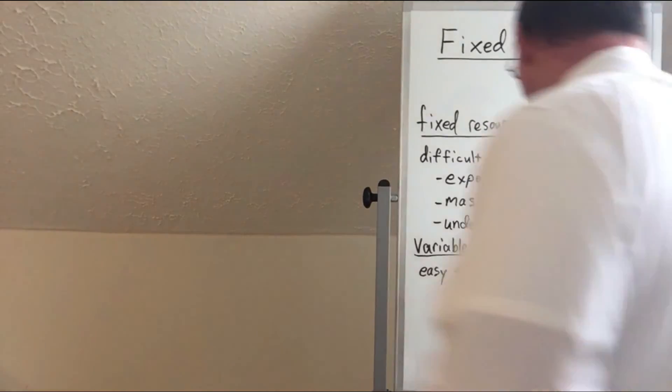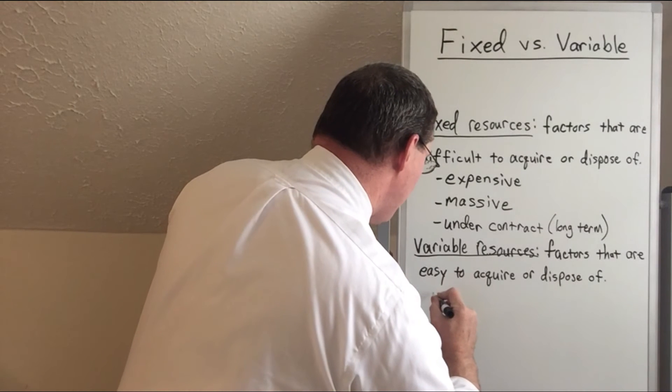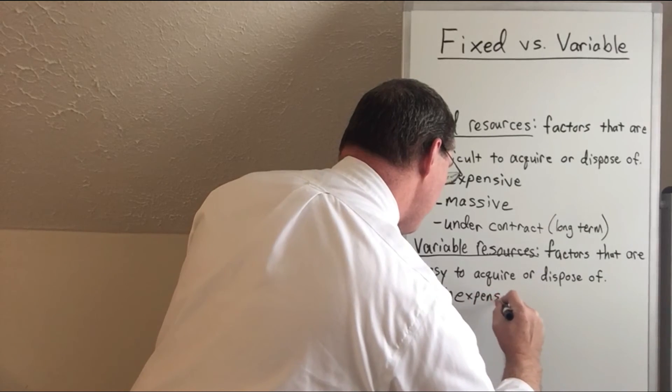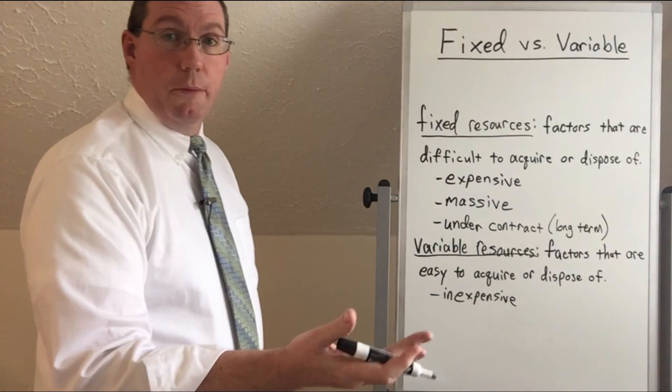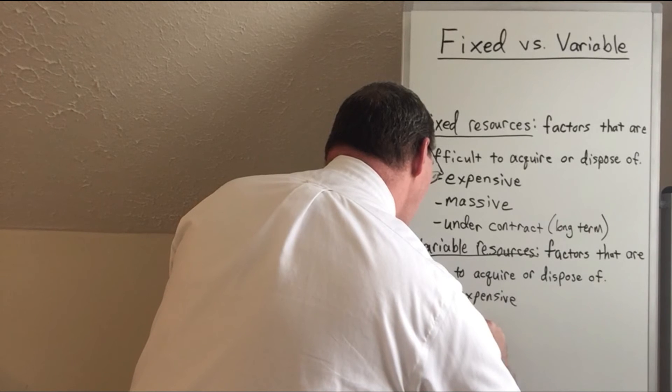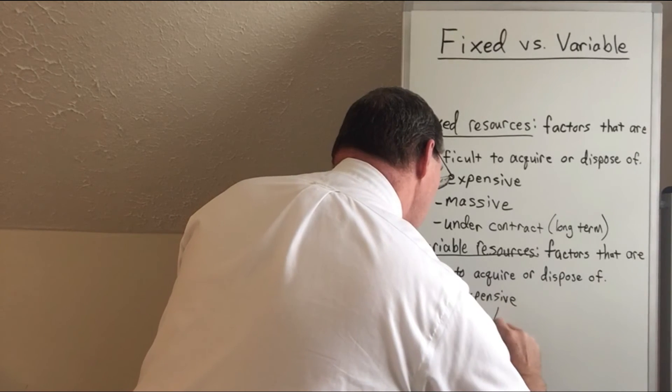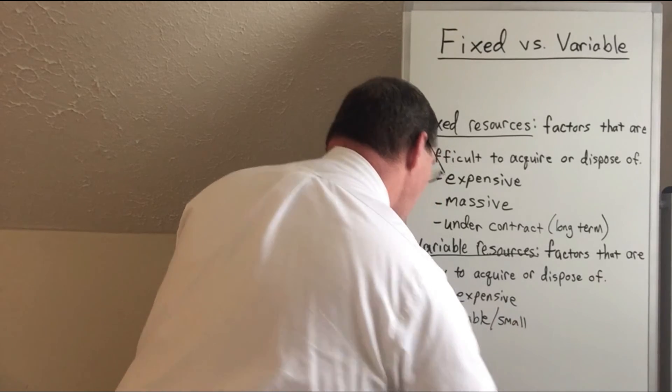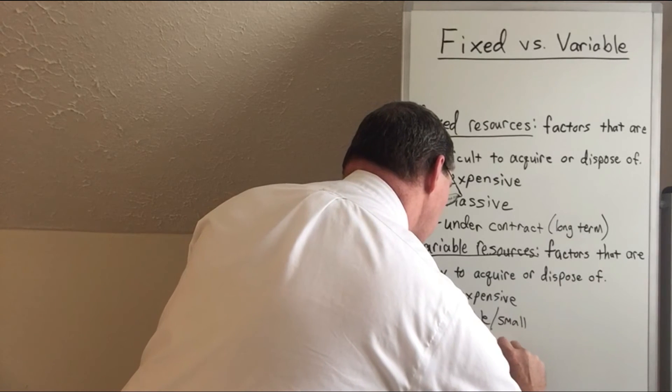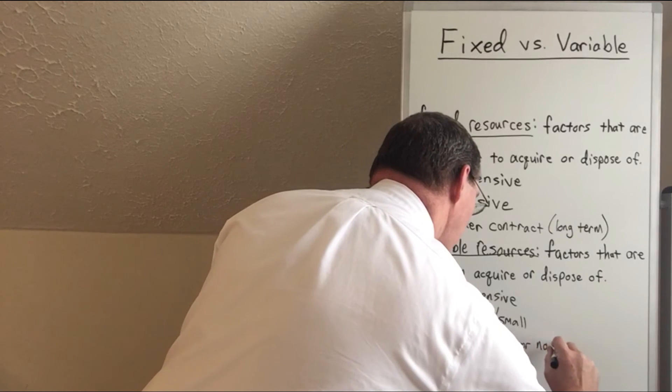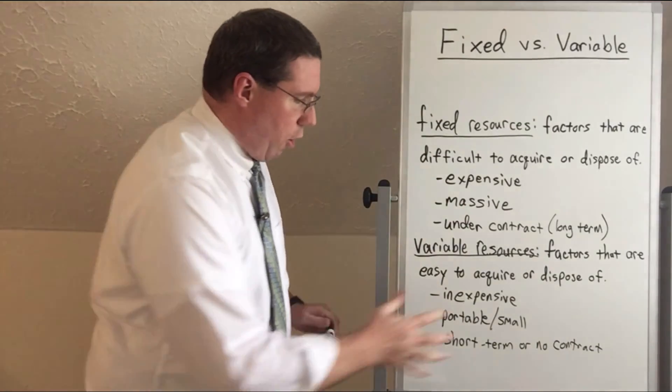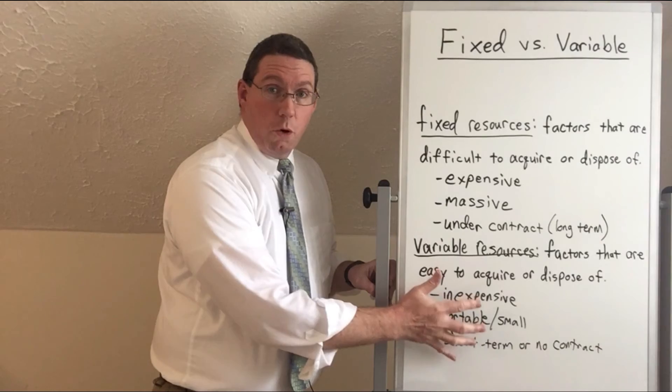See, short term contracts are easy to get out of because they don't last very long. So down here under variable resources, we will say inexpensive resources, like laptop computers. You can get those for like two or three hundred dollars each. Inexpensive. They're usually portable items or just simply small. And then the third quality is short term or no contract. And so these things are easy to get, to acquire and get rid of.